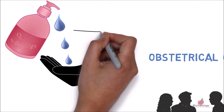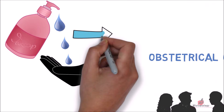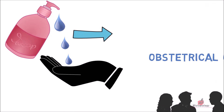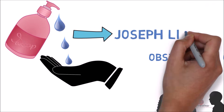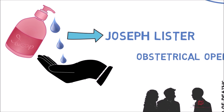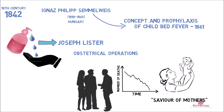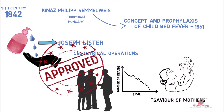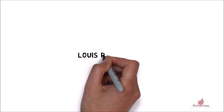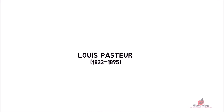Though Semmelweis's work was ignored, the concept of antisepsis was brought to life by the experiments of Joseph Lister in England. Later, the importance of antisepsis was completely understood and appreciated by the medical profession. On the other side, Louis Pasteur had successfully worked on fermentation issues and pébrine disease, a silkworm disease that ruined the silk industry in France.